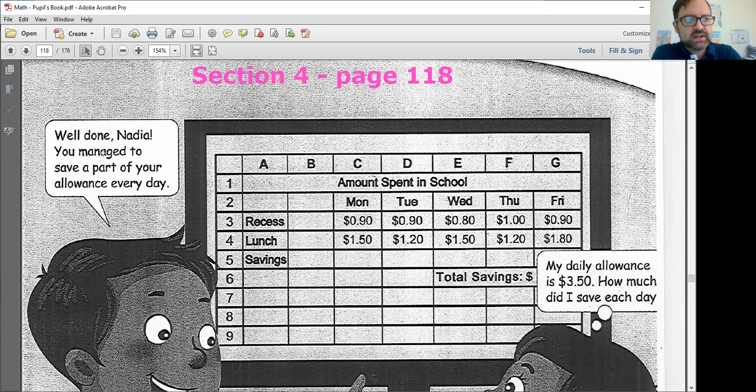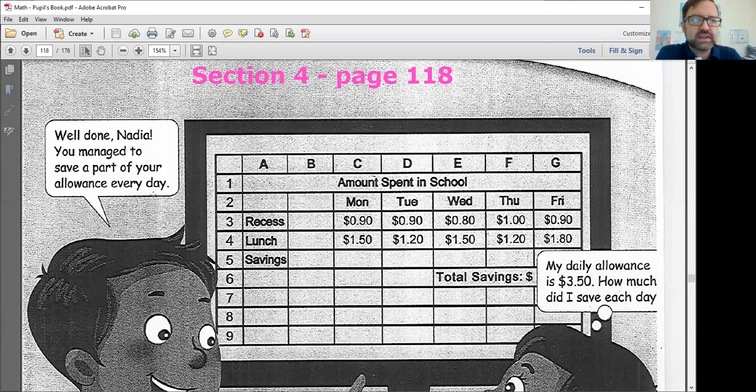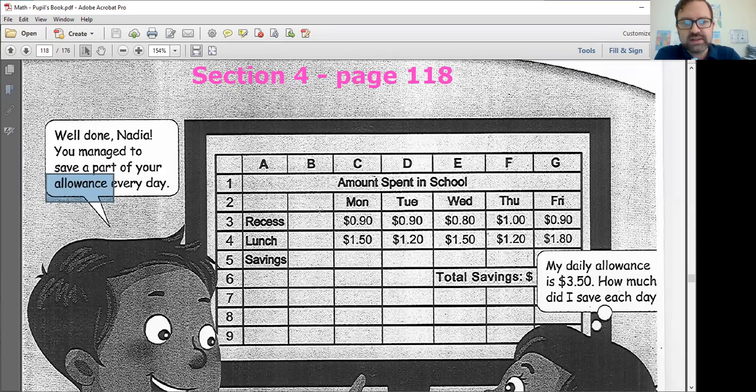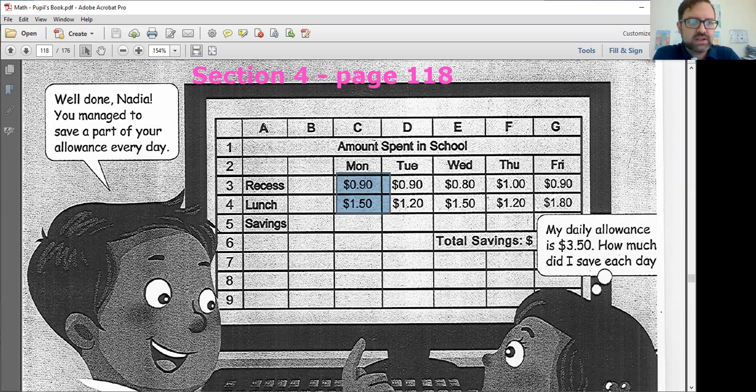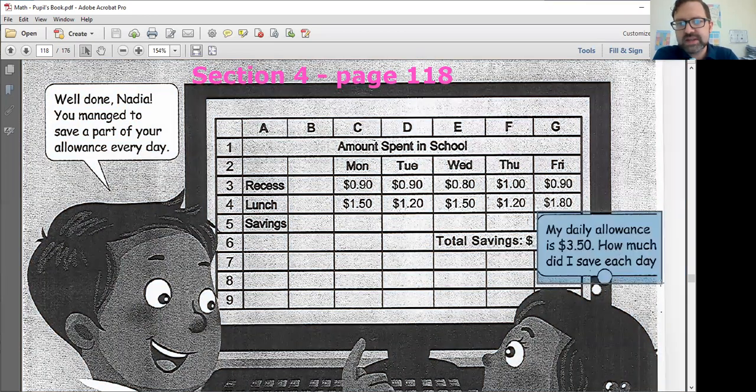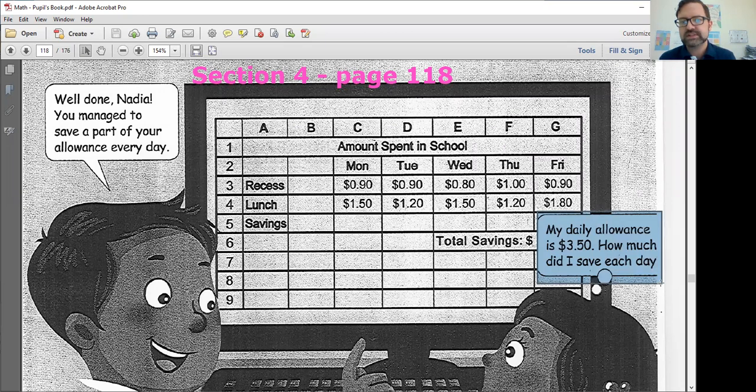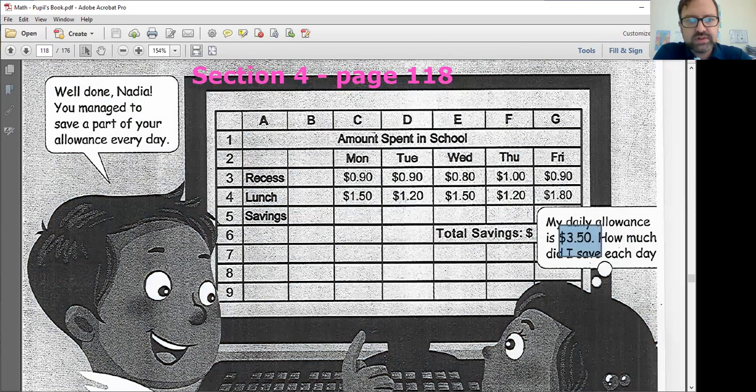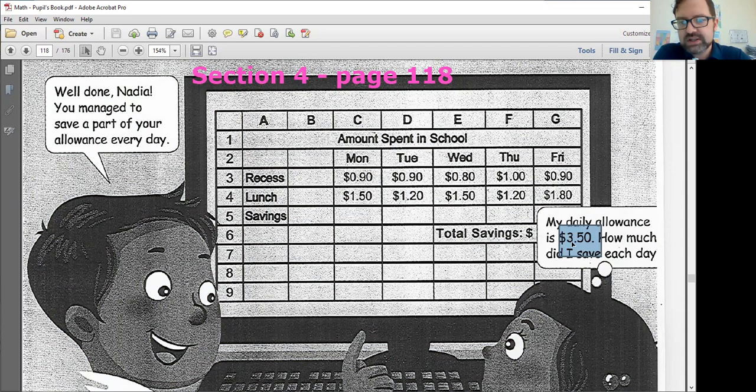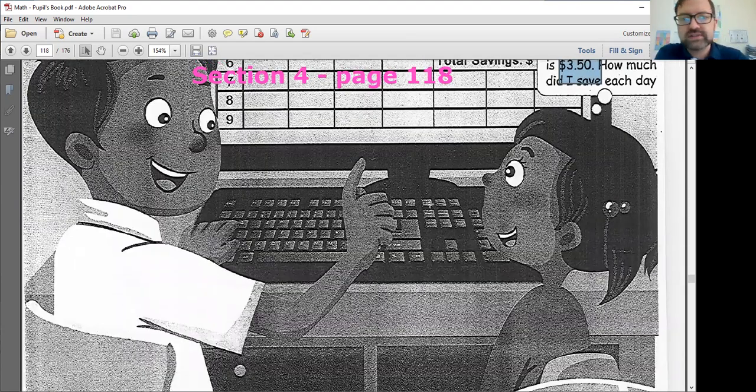So let's just look at this. It says, well done, Nadia. You managed to save part of your allowance every day. Allowance is like money that kids get for things like food or doing chores or things. And she does not know how much money she's saved. She says, my daily allowance is $3.50. How much did I save each day? Well, let's check it out. If she makes $3.50 per day and she's got one, two, three, four, five days here, I would say she should multiply this $3.50 by five, the number of days, and then subtract all these other amounts. We can add these up. So we're going to be solving things like these.